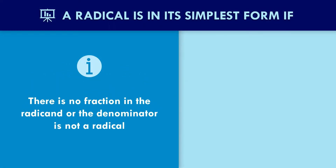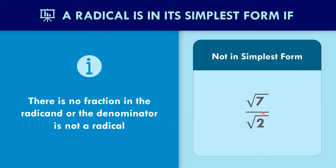A radical is in its simplest form if there is no fraction in the radical or the denominator is not a radical. In the given expression, square root of 7 over square root of 2, this is not in simplest form because the denominator contains a radical. So it must have no fraction in the radical or the denominator must not be a radical.